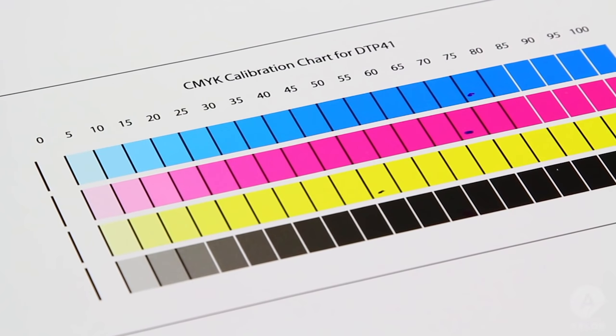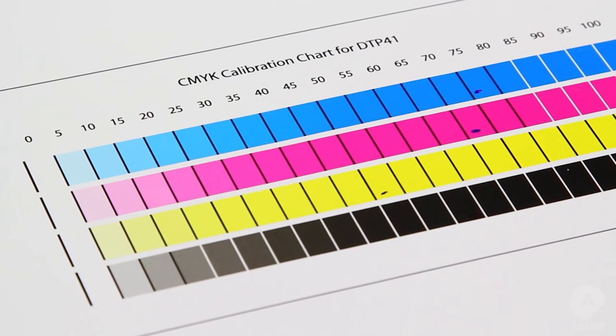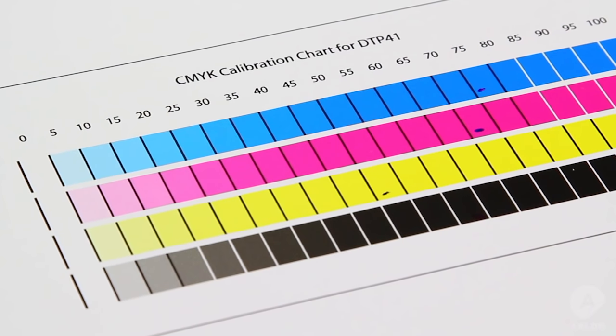On this chart we have chosen 75 for cyan, 70 for magenta, 50 for yellow, and 60 for black.